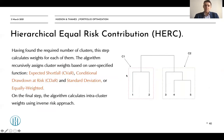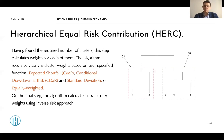Once we have found the required number of clusters, the next step calculates weights for each of them. As previously discussed, we can use expected shortfall, conditional drawdown at risk, standard deviation, or equally weighted allocation between clusters. The algorithm calculates intracluster weights using the inverse variance approach. Notably, the original HRP paper shows that the equally weighted technique works remarkably well and is difficult to beat in practice. Inside each cluster, you can use expected shortfall, conditional drawdown at risk, standard deviation, or equally weighted approaches.